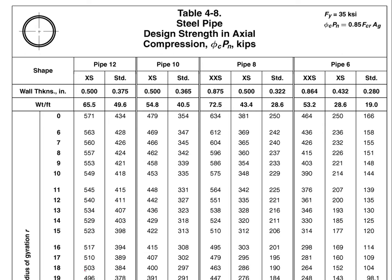For pipe, we come down to 14 feet, scan across, and discover that the only sections that will support 440 kips are two options. We could go to lower pipe sizes, but they're not going to have a chance.